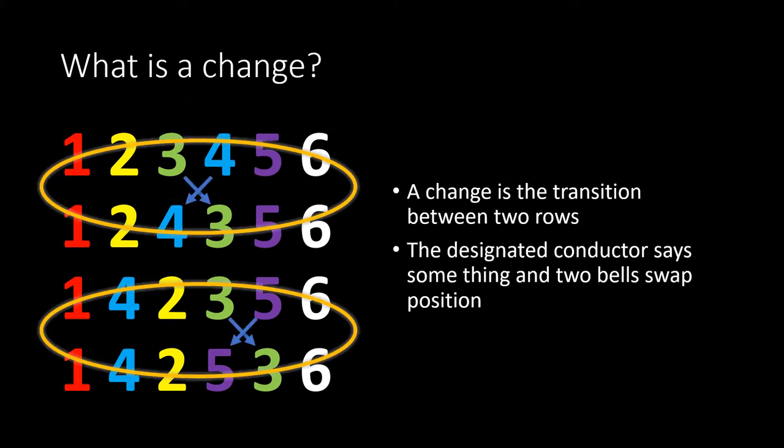What is a change? A change is the transition between two rows. Looking at the same rows as before, for each transition we can see that two bells swap over — first the three and the four swap, then the two and the four, then the three and the five.